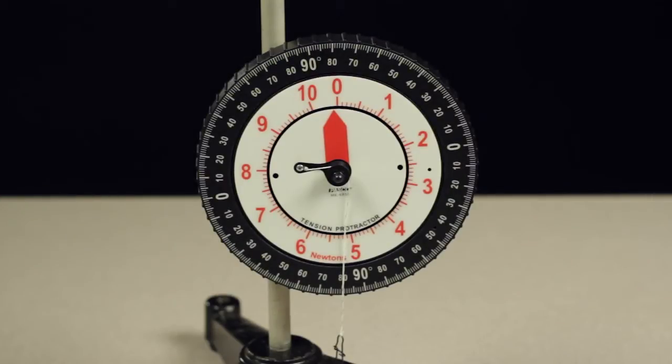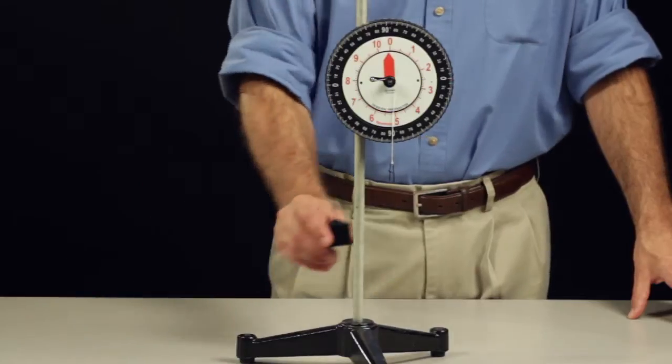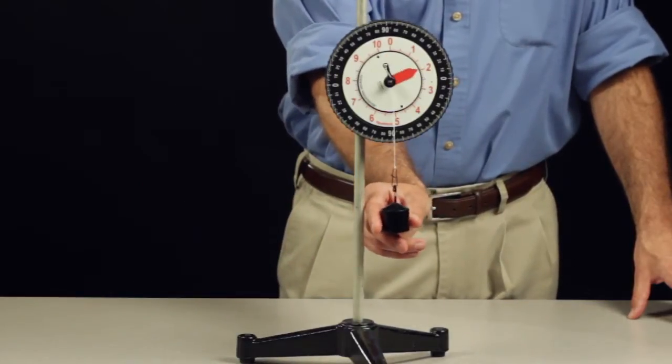The ME6855 Tension Protractor is a spring scale on a protractor integrated into one device. Perfect for static equilibrium experiments.